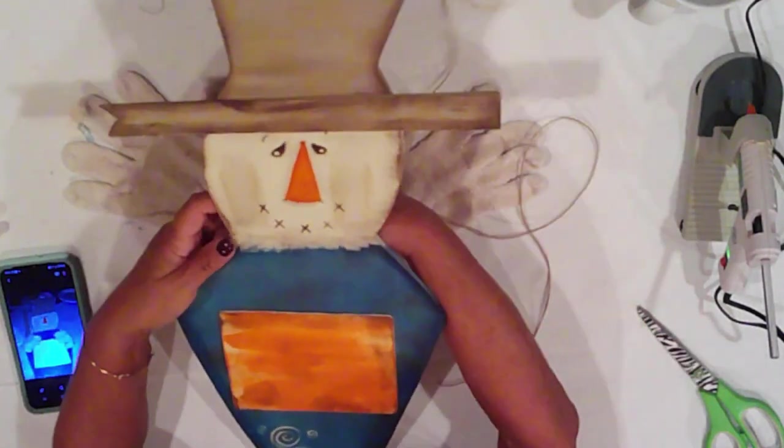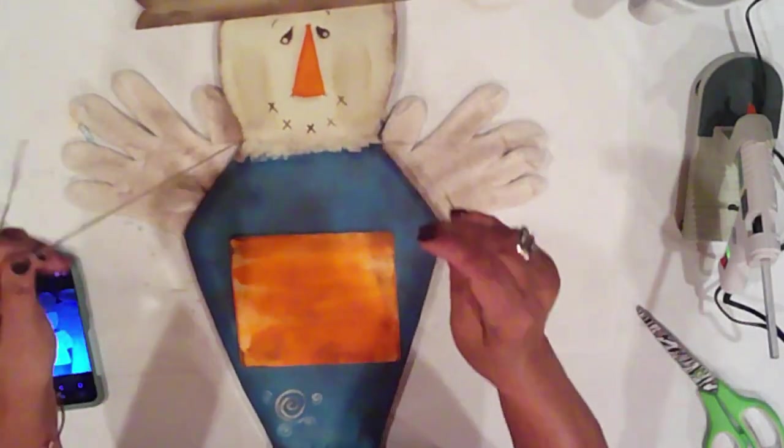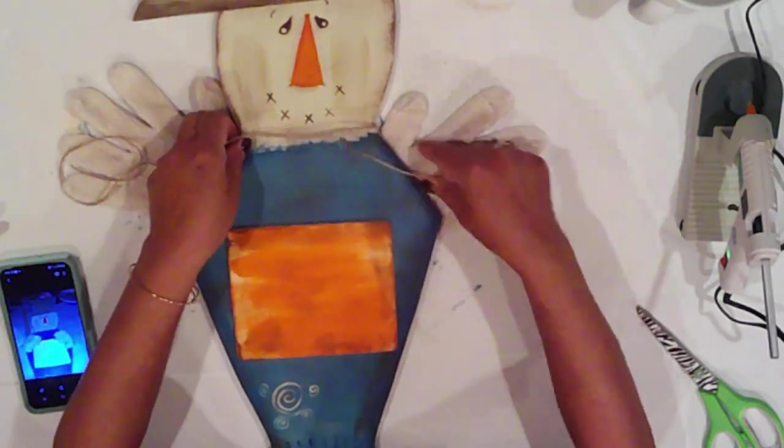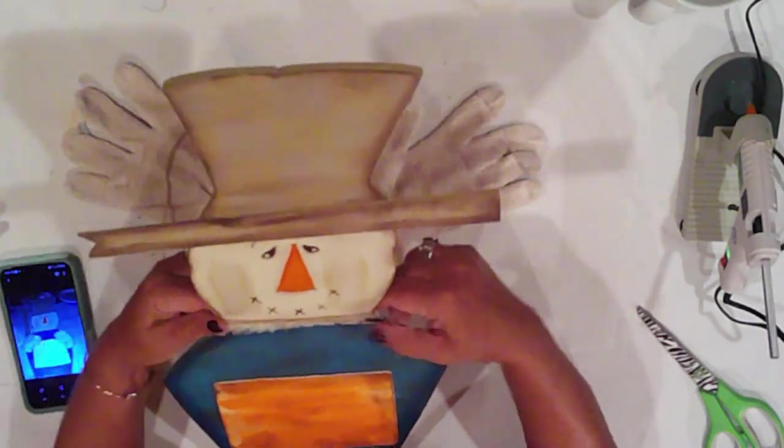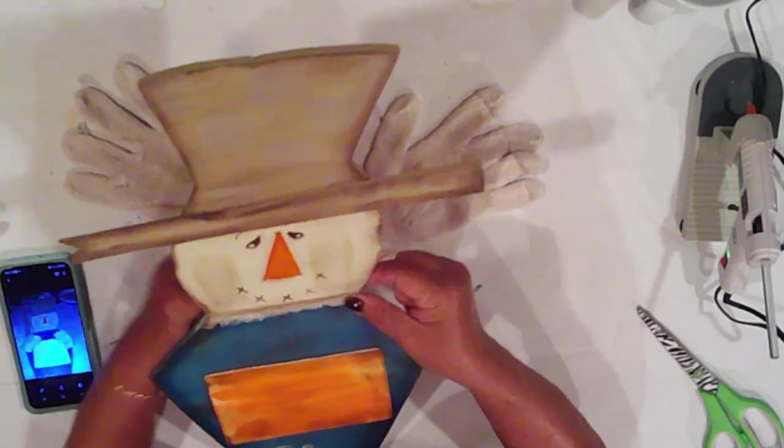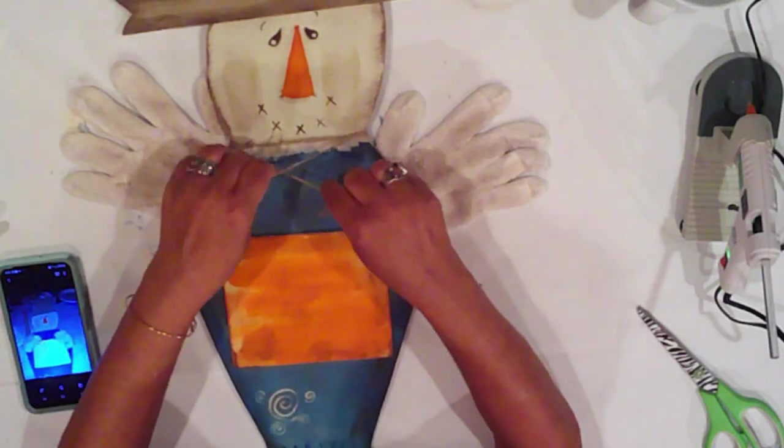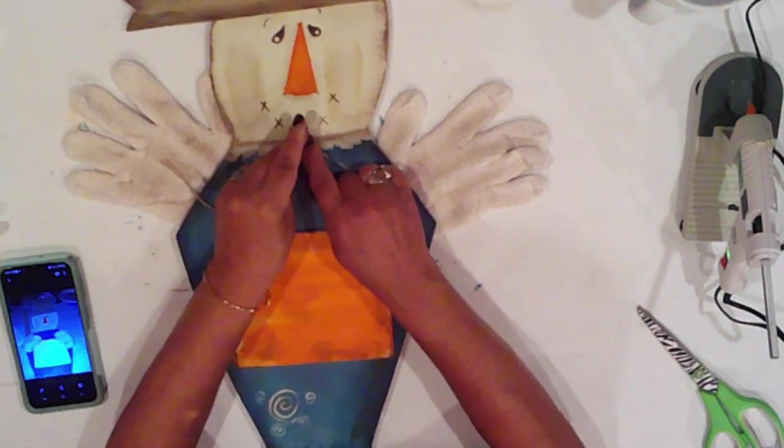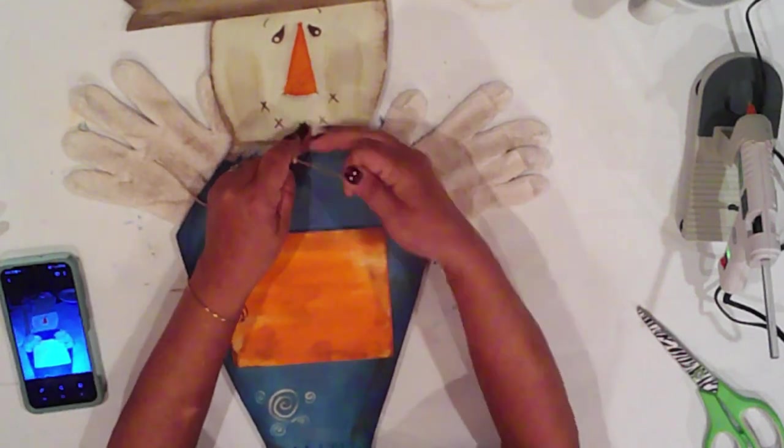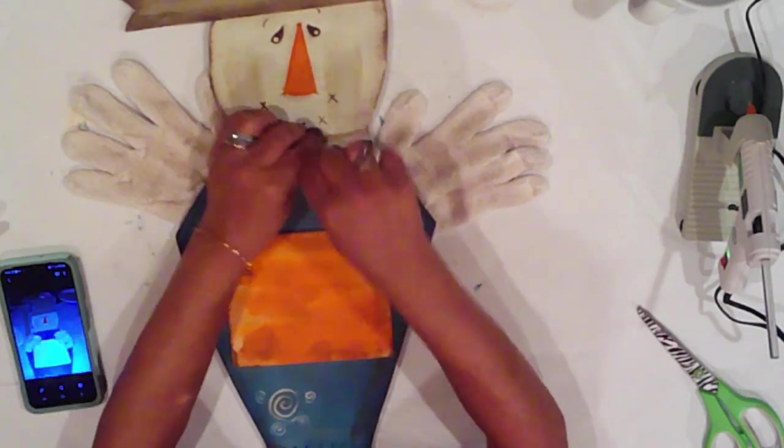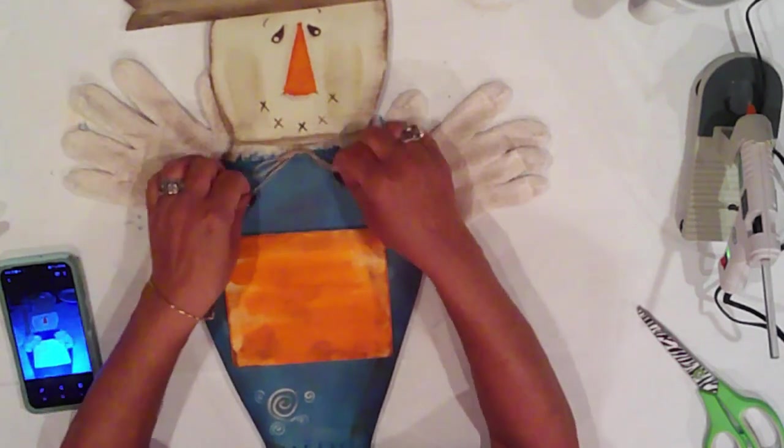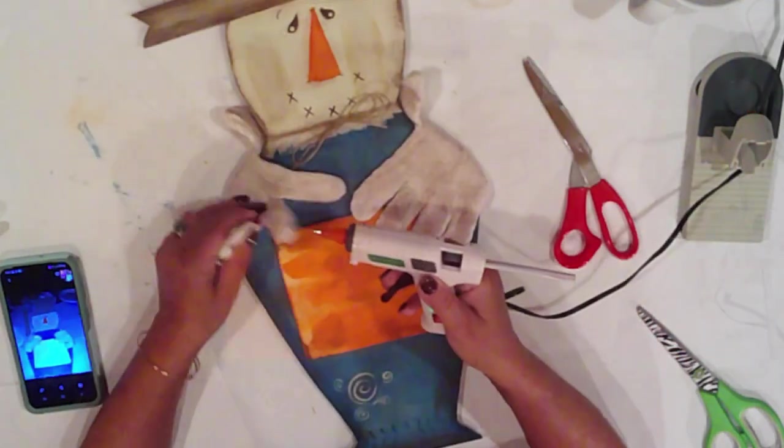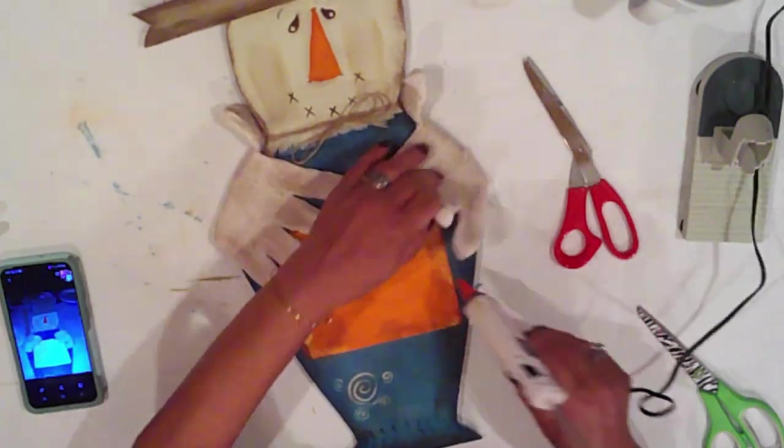Next, I'll wrap some jute around his neck and I'll tie it in a bow, right at the cinch line. Now I can glue his gloves in place.